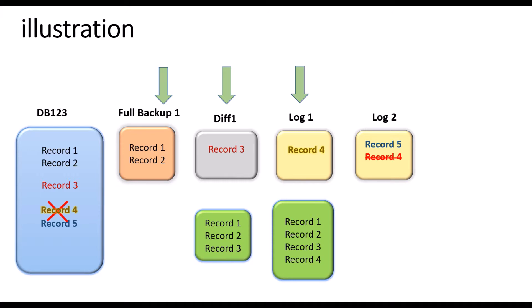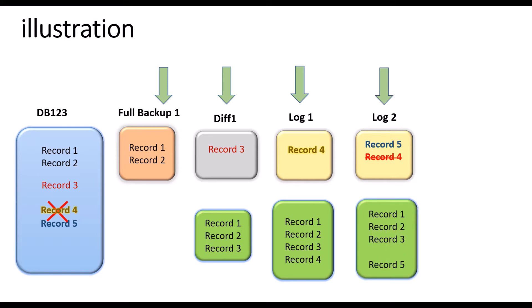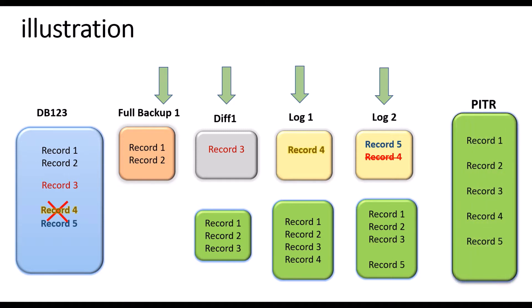If I stop restoring at the first log backup I need record five also, but if I restore the log 2 backup, along with adding record five, record four will be deleted. So my requirement is I want to restore all five records, and I am going to achieve that using the point-in-time recovery method.